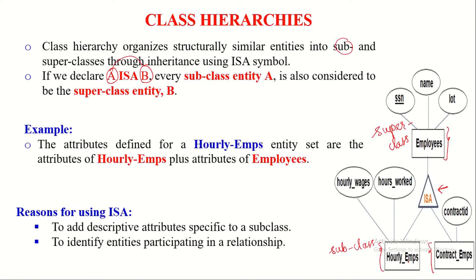Accordingly, if we take the hourly employees entity set — it is the subclass entity set — it acquires all three attributes from its parent entity set. So in addition to its own two attributes, it also takes the three attributes from the employees entity set, giving it five attributes in total. Similarly, the contract employees entity set takes four attributes: the three inherited attributes plus its own contract ID attribute.